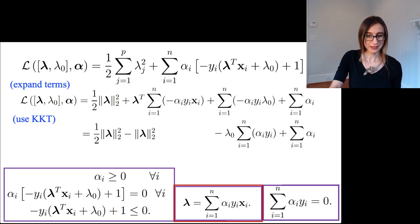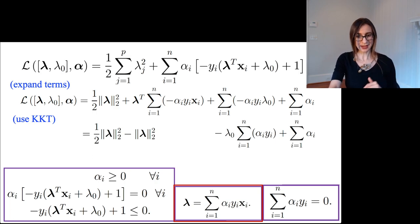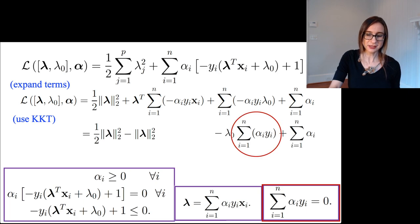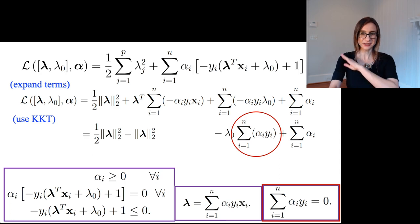What I'm going to end up with in this term is negative norm lambda squared. Then I notice that another one of my terms has this sum in it which is zero, so the whole term goes away. I can just knock that guy right out.